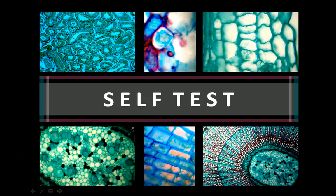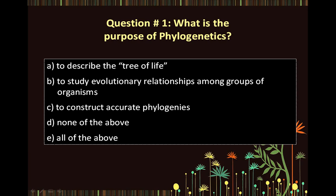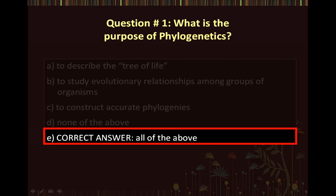Okay, so let's now try a self-test. The following six questions will test some of the content presented in this animation. Each question will pause briefly before revealing the answer. If you need more time to think, make sure to hit the pause button before the animation progresses and automatically reveals the answer. Question number one: What is the purpose of phylogenetics? A. To describe the tree of life. B. To study evolutionary relationships among groups of organisms. C. To construct accurate phylogenies. D. None of the above. And E. All of the above. The correct answer is E, all of the above.